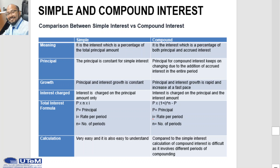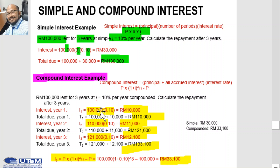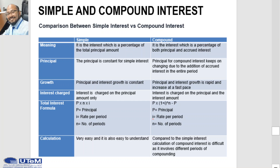Looking at the previous example: in year 1 the principal is RM100,000, in year 2 the principal becomes RM110,000, and in year 3 the principal is RM121,000. So the principal in simple interest is constant, but in compound interest the principal changes.